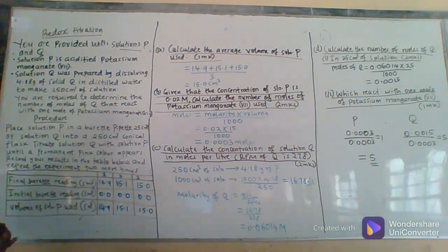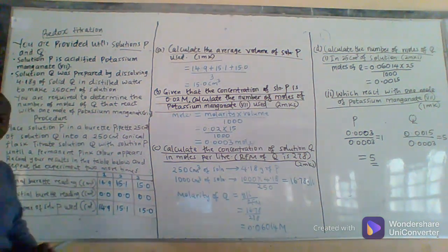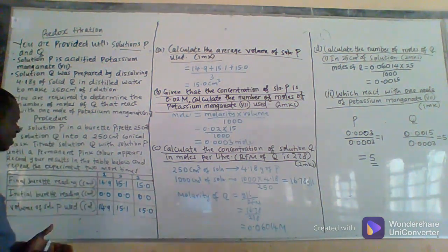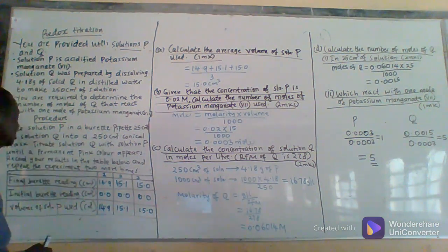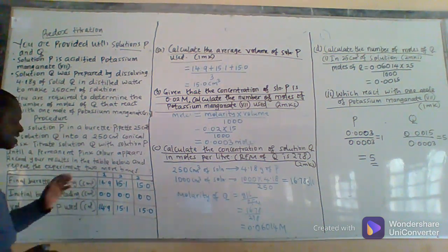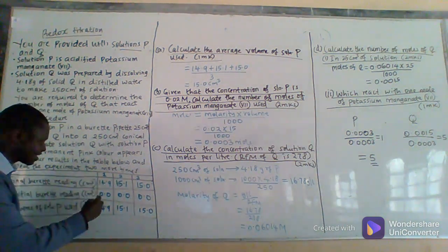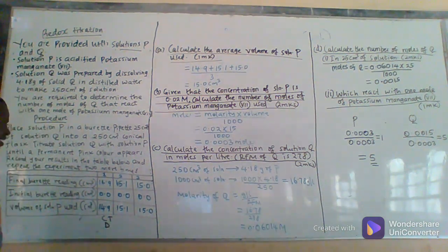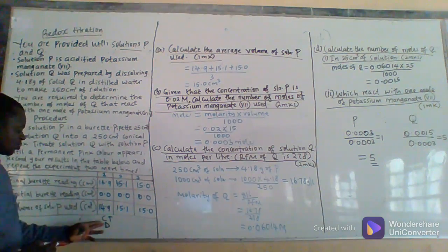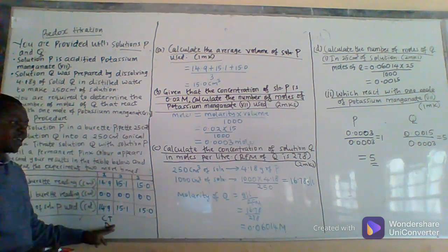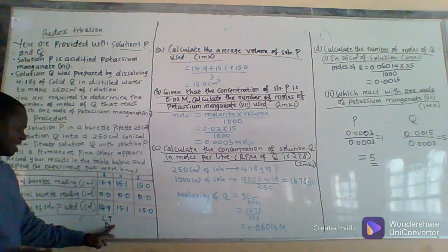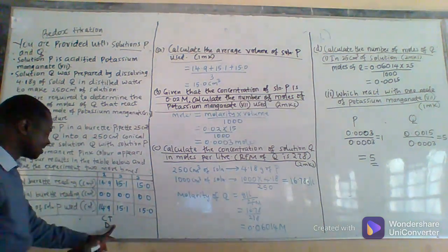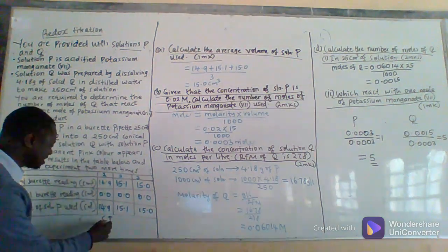I'll mention a few things about how to record results in the table. As a student, when completing the table during titration: number one, follow instructions — the procedure is very clear, follow it. Number two, when you have performed the experiment, complete the table, because the first mark lies on a complete table. The second mark is on decimal places — ensure that all your values are given to at least one decimal place. If you decide to use two decimal places, then the second decimal place should be 0 or 5.